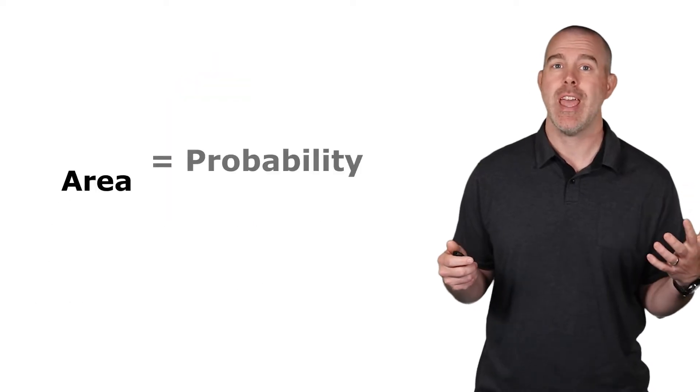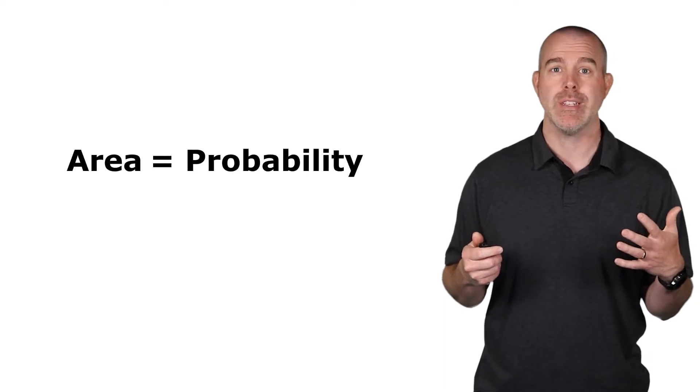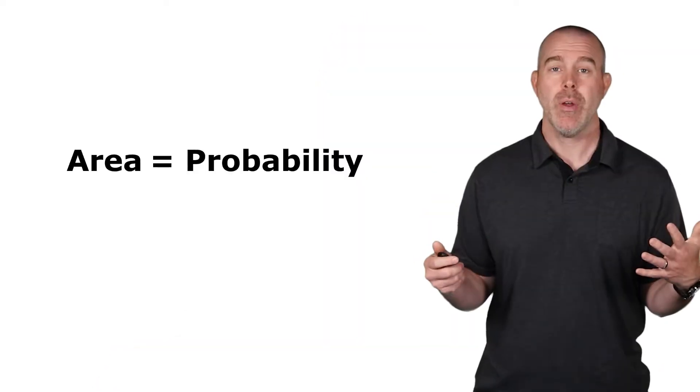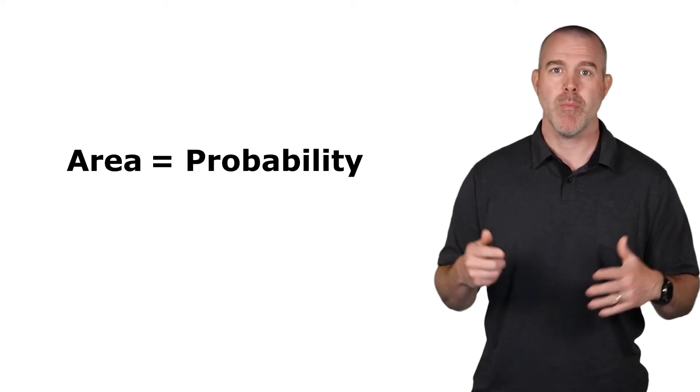So if we add up the areas of those rectangles, we get, of course, the same thing, but this area being probability is really important. And this is going to be the foundation for pretty much the rest of the course. The area underneath the probability density function is the probability of your variable being in that particular interval.